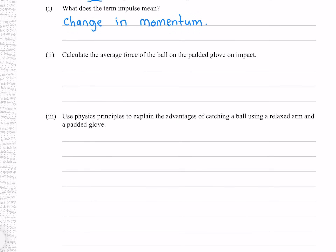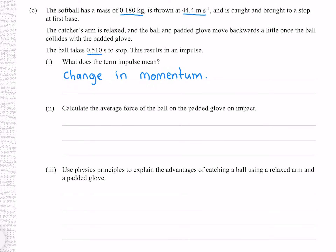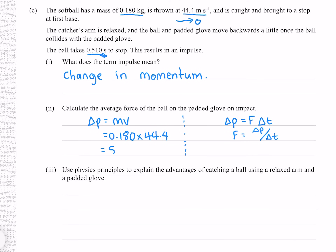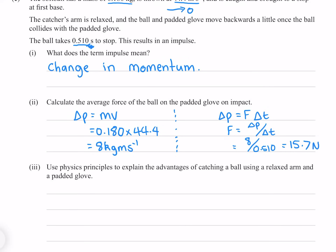Calculate the average force of the ball on the padded glove on impact. Using the equation that change in momentum equals force times duration, and solving for force. Our duration is 0.510 seconds. Because the softball comes to a stop, our change in momentum is mass times velocity: 0.180 times 44.4, which gives 8 kilogram meters per second. Putting that in gives 15.7 newtons to three significant figures.